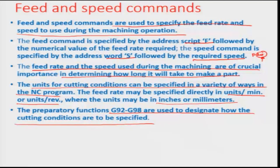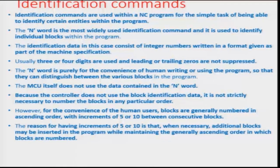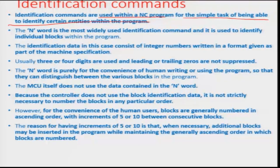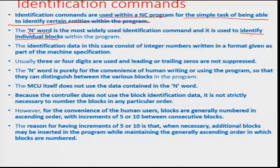Preparatory functions G92 to G98 are used to designate how the cutting conditions are to be specified. This gives you an idea of how you prepare the axis before starting the machining operations. Next in the line come identification commands, which are used within the NC program for the simple task of being able to identify certain entities within the program. The most common identification command is the N word, which is used to identify the individual block or line within the program.